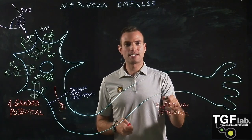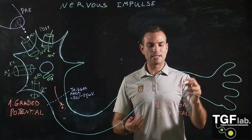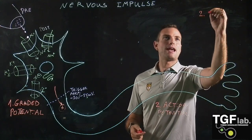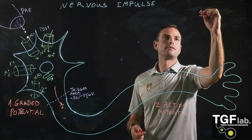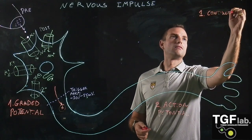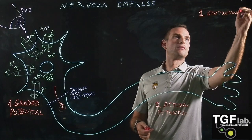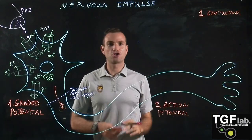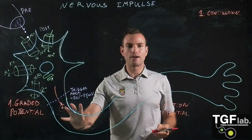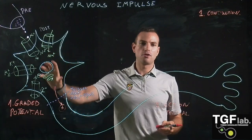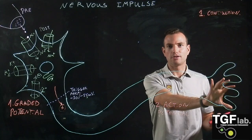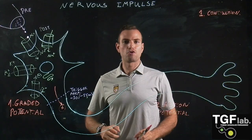One of the first differences or characteristics of the action potential is that it's going to mediate the conduction, in comparison to the graded potential that is initiation. The action potential is going to conduct the nervous impulse from the neuronal body into the neuronal axonal terminals for the release of the neurotransmitters.